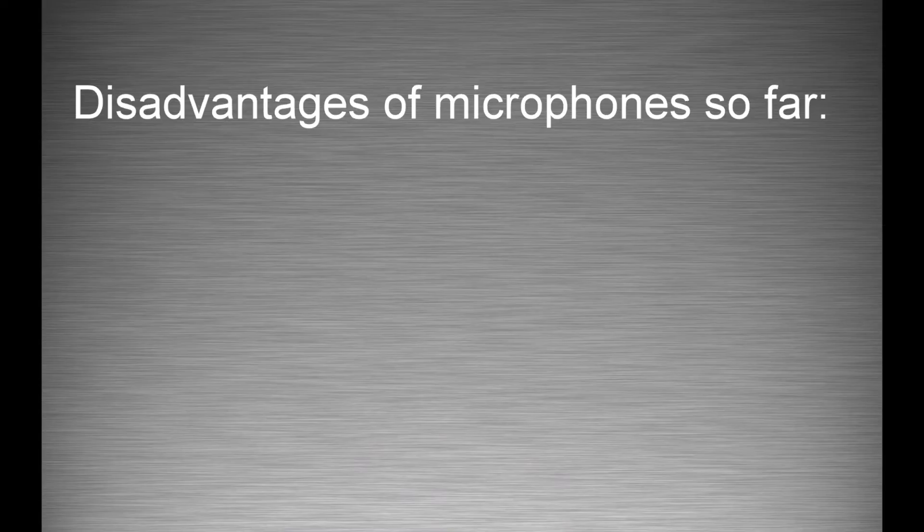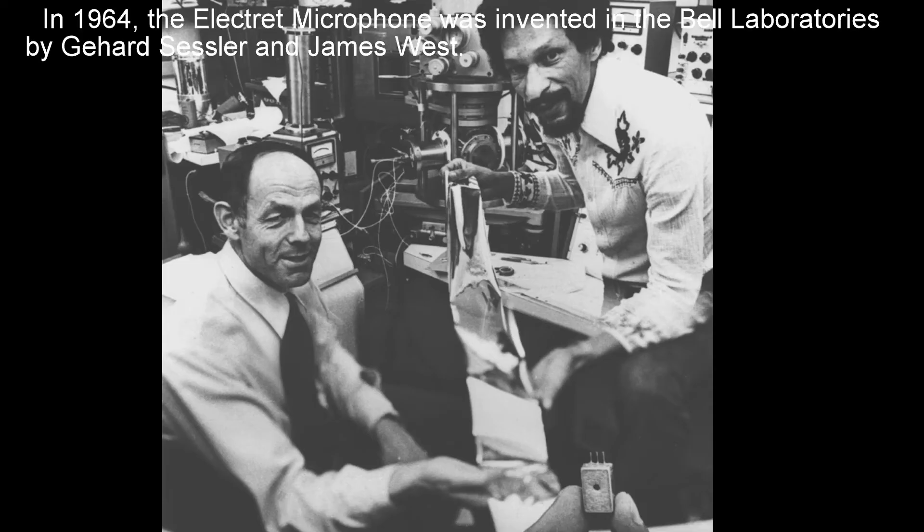But all of these microphones were pretty bulky, expensive and not easy to incorporate into other electronics. And then came the electric microphone which were an improvement upon the condenser microphone. And they were introduced in 1964 in Bell Laboratory by Gerhard Sesler and James West.